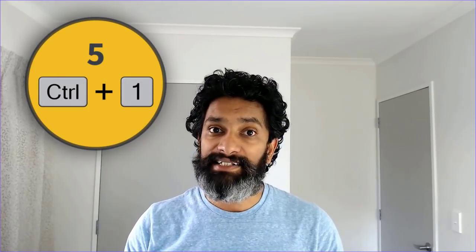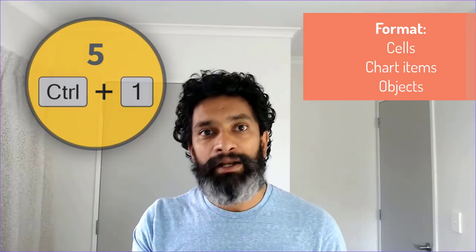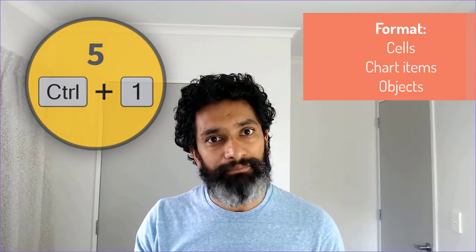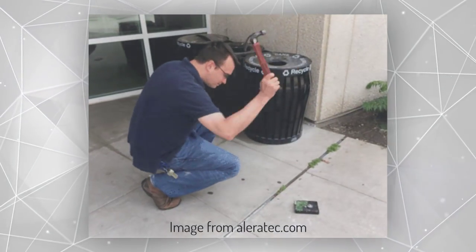The fifth one is Ctrl+1. Ctrl+1 is a universal shortcut — it can do multiple things. If you select a range or a cell and press Ctrl+1, it opens the format cells dialogue. If you select a chart element like a series, axis, or labels, it opens the format for those things. If you select a drawing shape like a text box or an image, it opens the format properties for those. Ctrl+1 is for formatting anything — it's universal, easy to remember, and useful in different situations.